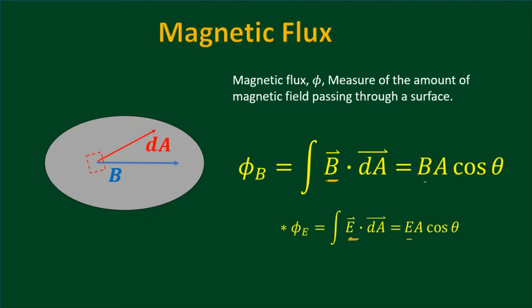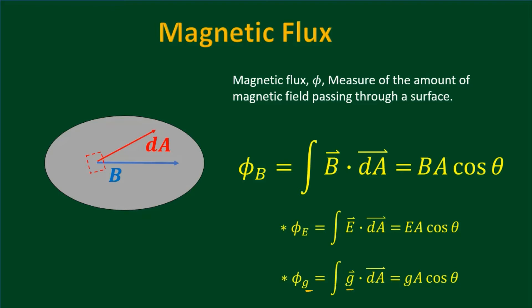There's also gravitational flux, though we don't really cover it in Physics C — gravitational field strength is g, and integrating over an area gives gravitational flux. The units of magnetic flux come from field (in teslas) times area (in square meters), giving tesla·meter squared. There's a name for that unit: one tesla·meter squared equals one Weber. So Webers are the units of magnetic flux.